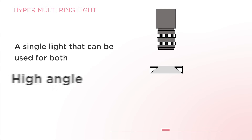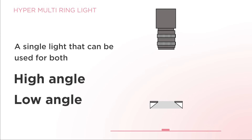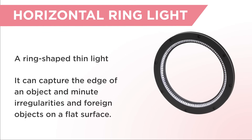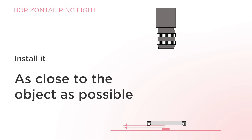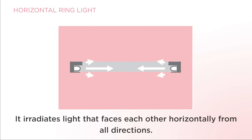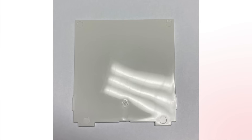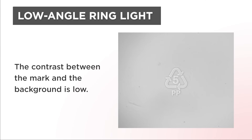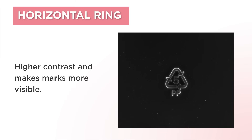Hyper multi-ring lighting is a single light that can be used for both high and low angles. The last type is horizontal ring lighting — a ring-shaped thin light that irradiates light horizontally from all directions. Install it as close to the object as possible. It can capture the edge of an object and minute irregularities and foreign objects on a flat surface that cannot be captured with a low angle ring. For example, imaging a recycling mark on a plastic partition board with low angle ring lighting yields low contrast, while horizontal ring lighting allows for higher contrast and makes marks more visible.